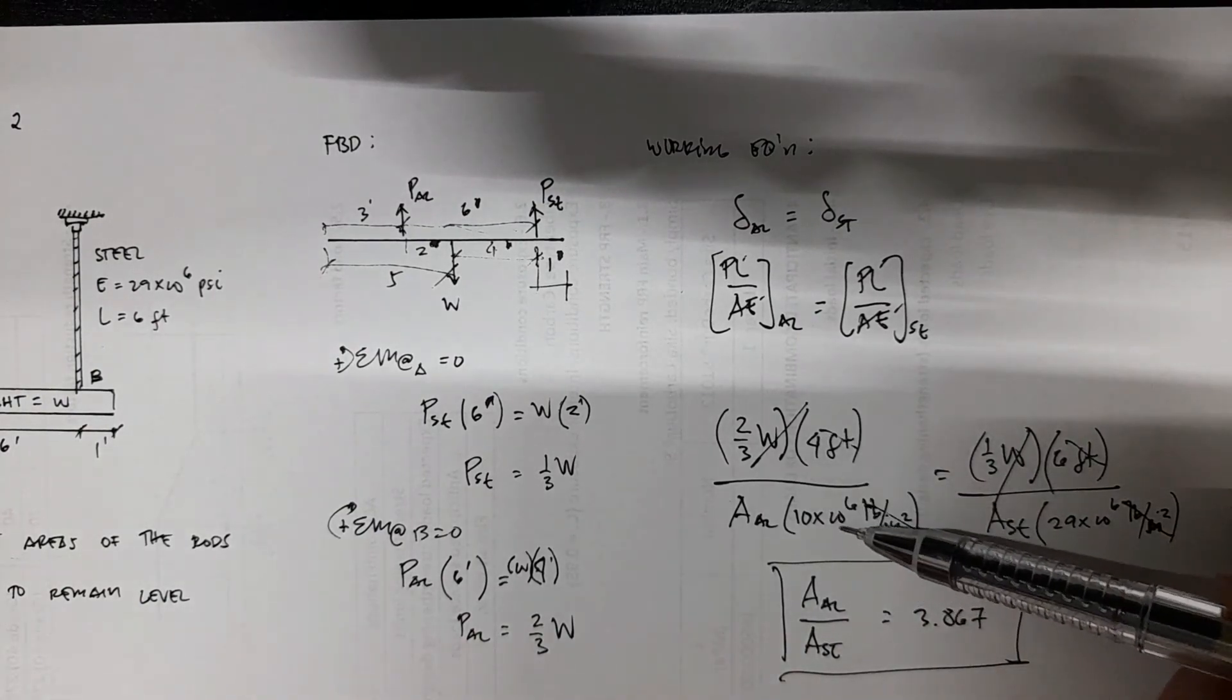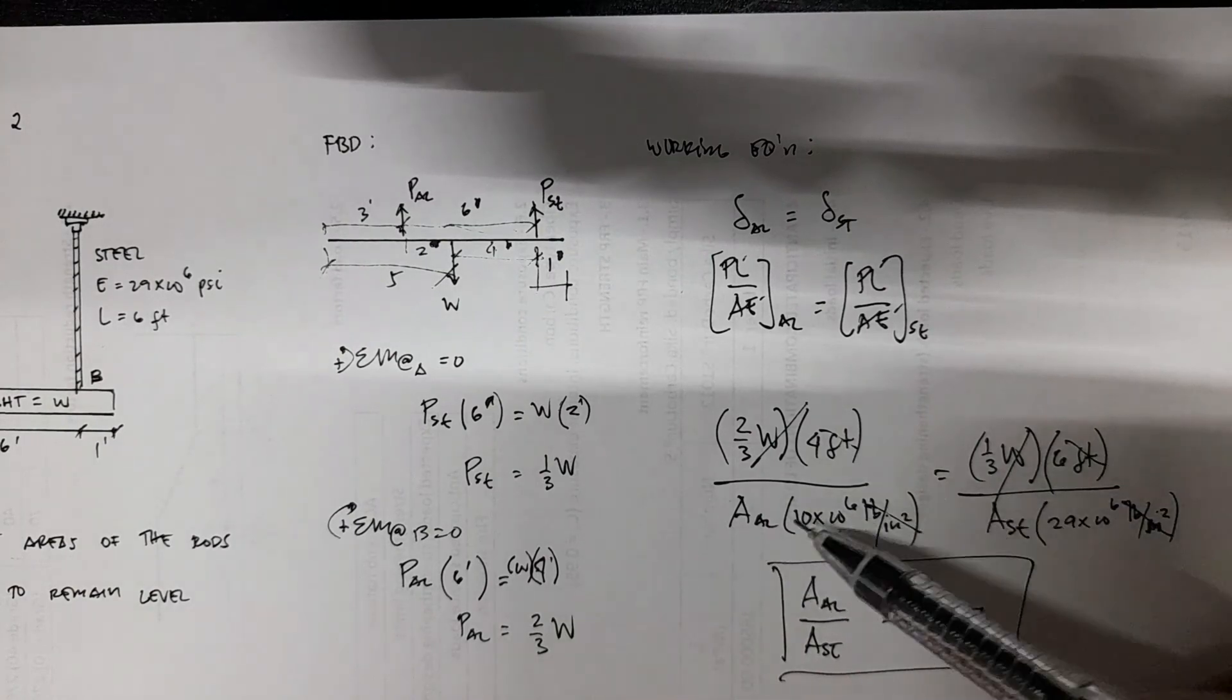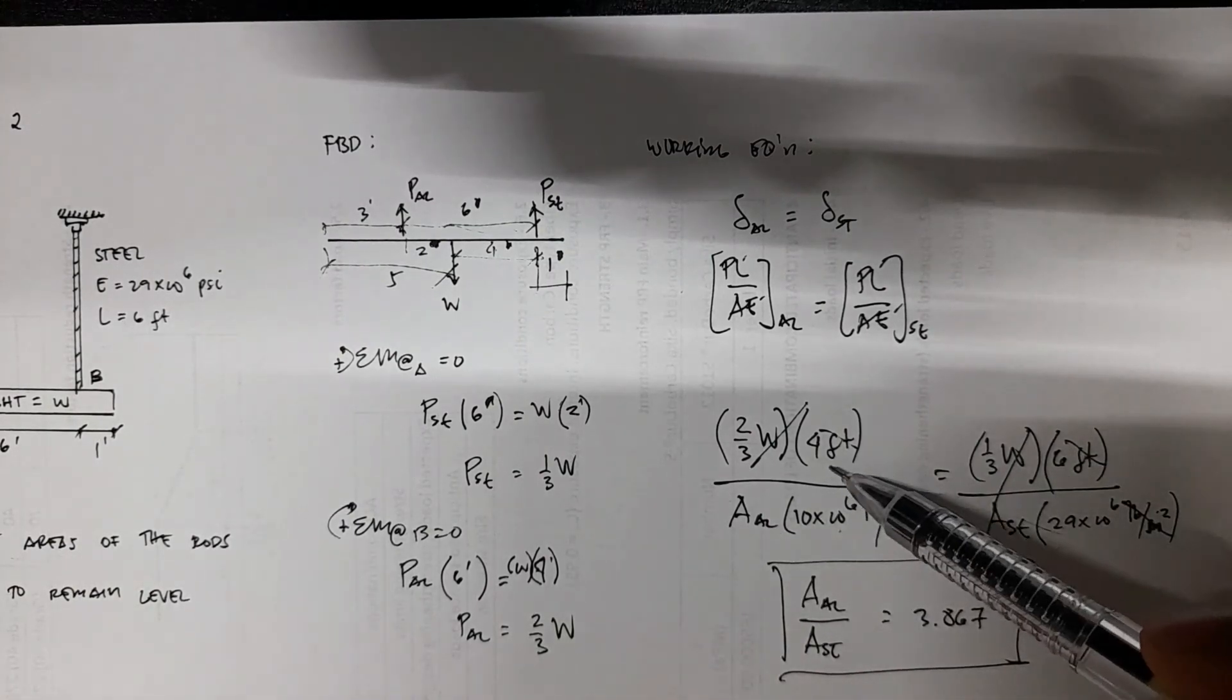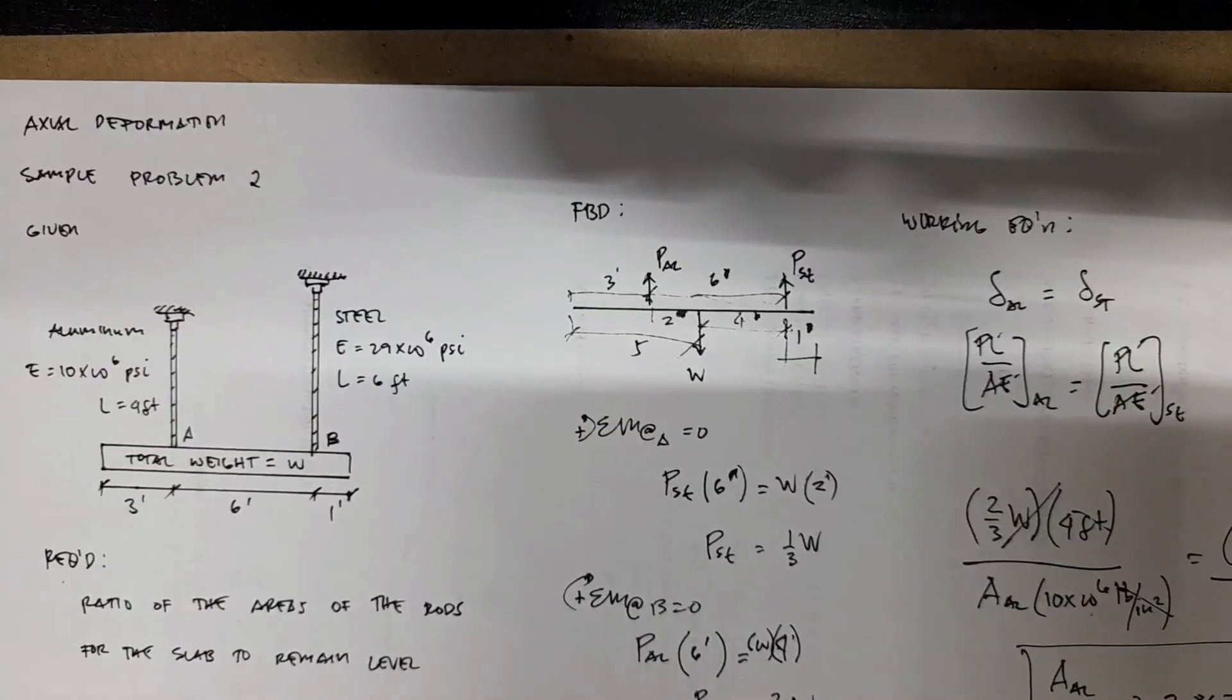You have two-thirds divided by this one, and then one-third divided by this one, then place A_AL here, then you multiply 29 over there, so you'll have 3.867.